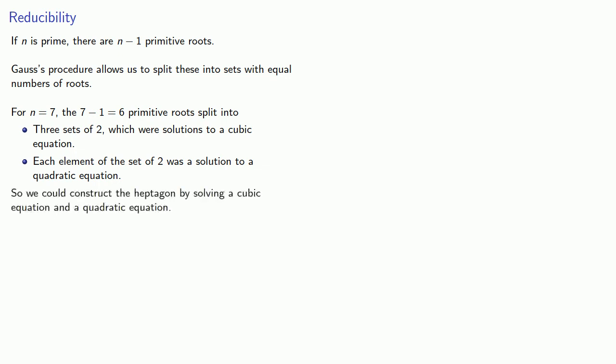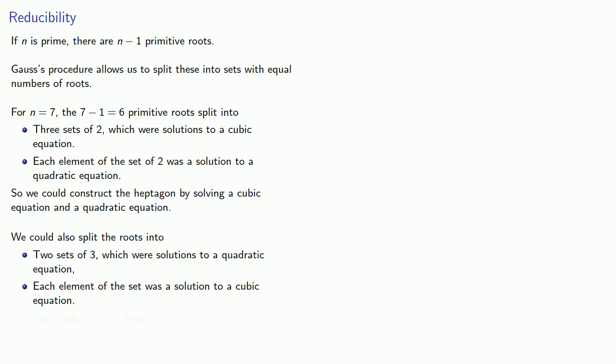And so we could construct the heptagon by solving a cubic equation and a quadratic equation, which means we'll have to use conic sections. And you might remember the Islamic geometers did exactly that. Or we could also split the roots into 2 sets of 3, which were solutions to a quadratic equation, and each element of the set was the solution to a cubic equation. In other words, a cubic equation is unavoidable.